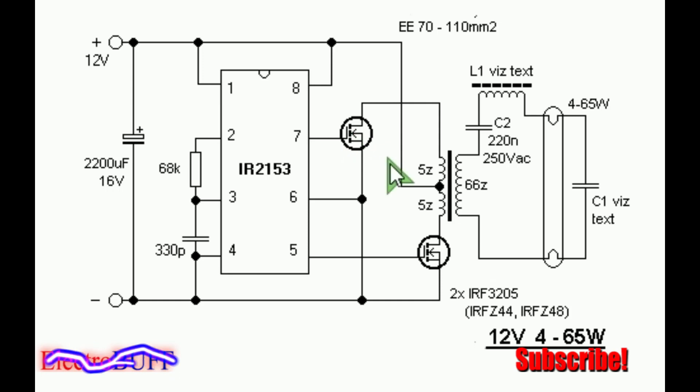So the MOSFETs are connected to act as a push-pull driver. So when pin 7 is high, the upper MOSFET conducts and current will flow from the 12 volts through the upper primary winding through the MOSFET into ground. So when pin 5 goes high, current will flow through the lower primary winding through the MOSFET into ground.